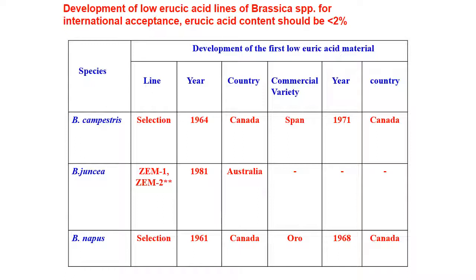For developing low erucic acid lines of Brassica for international acceptance, erucic acid content should be less than 2%. Lines developed for this purpose include a Brassica campestris selection line developed in 1964 in Canada, with commercial variety name 'Span', released in 1971 in Canada. Then Brassica juncea Zem-1 and Zem-2 from Australia. Brassica napus selection 'Oro' from Canada in 1968.